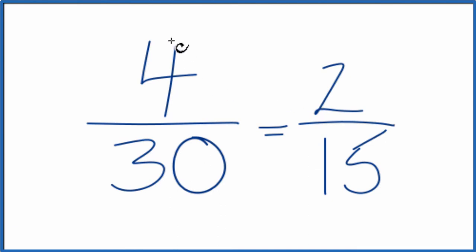So we've simplified 4 thirtieths down to 2 fifteenths. We can't simplify this any further, so this is our answer.